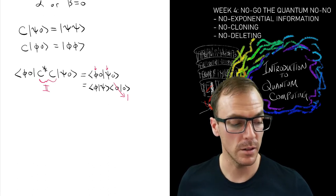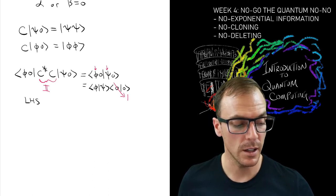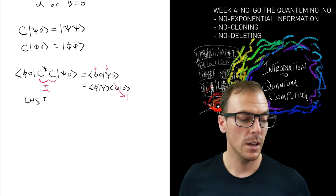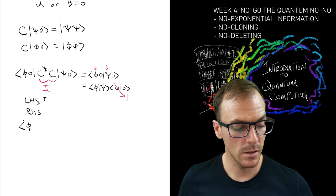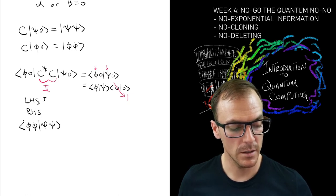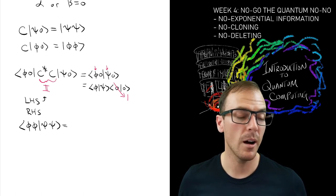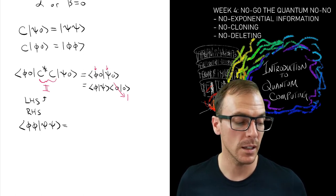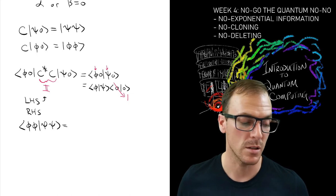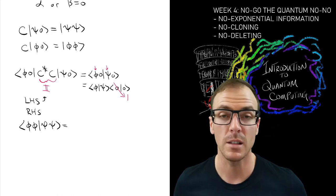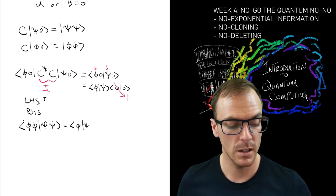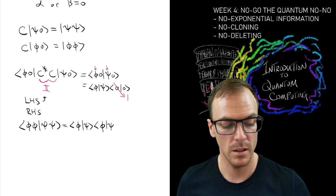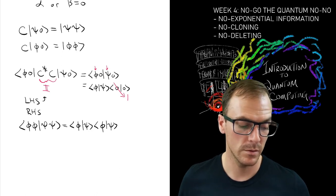That's the left-hand side. The right-hand side is ⟨φ|⟨φ||ψ⟩|ψ⟩. We pair up the things in the first position of both objects and the things in the second position, so we get ⟨φ|ψ⟩⟨φ|ψ⟩ or ⟨φ|ψ⟩².